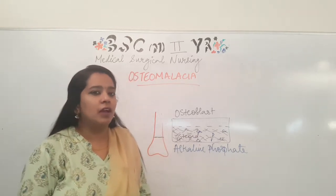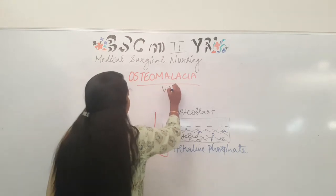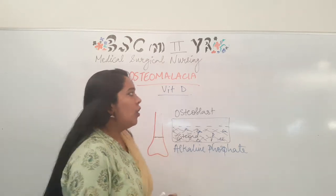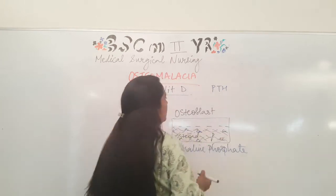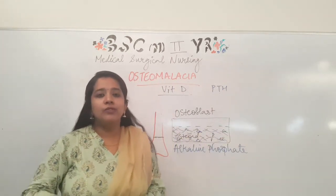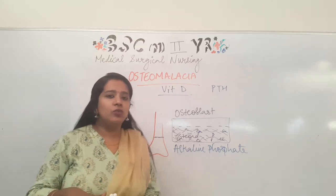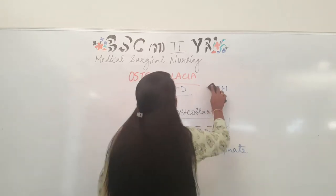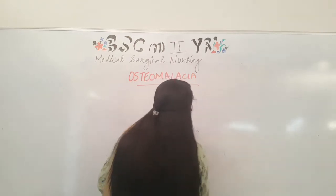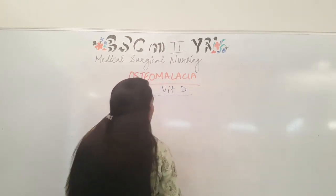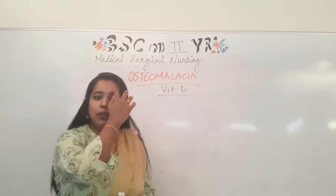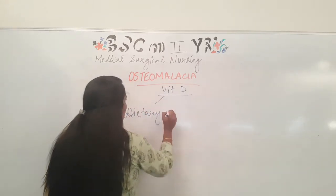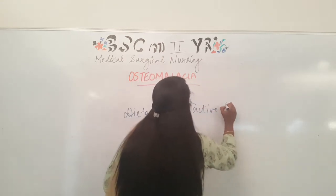Now where does the problem start? If we talk about Osteomalacia, two things are very important: one is vitamin D and the other is parathyroid hormone, which we call PTH. PTH is released by the parathyroid gland. So in Osteomalacia, both vitamin D and parathyroid hormone are very important. Let's first talk about vitamin D.